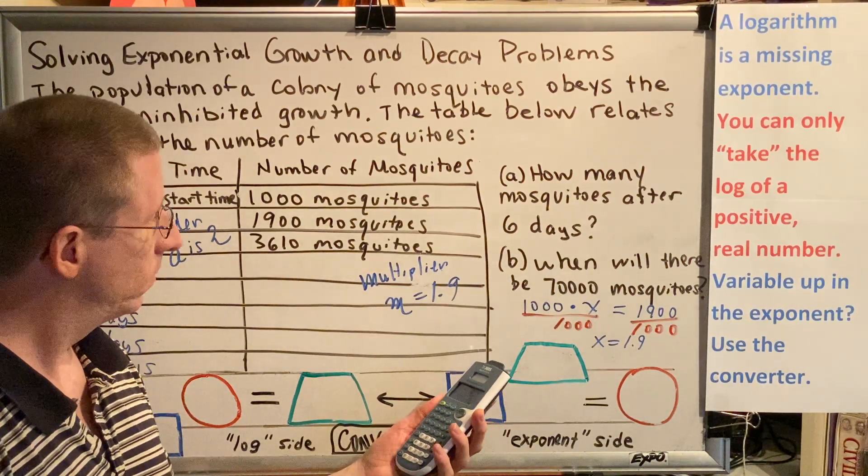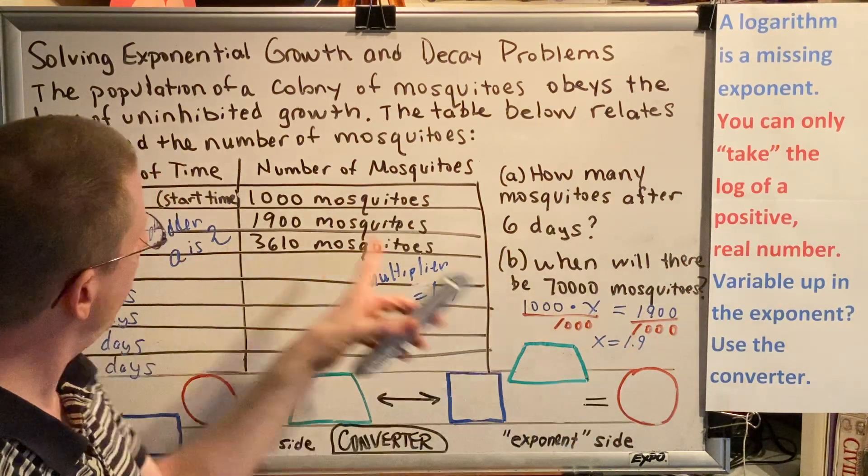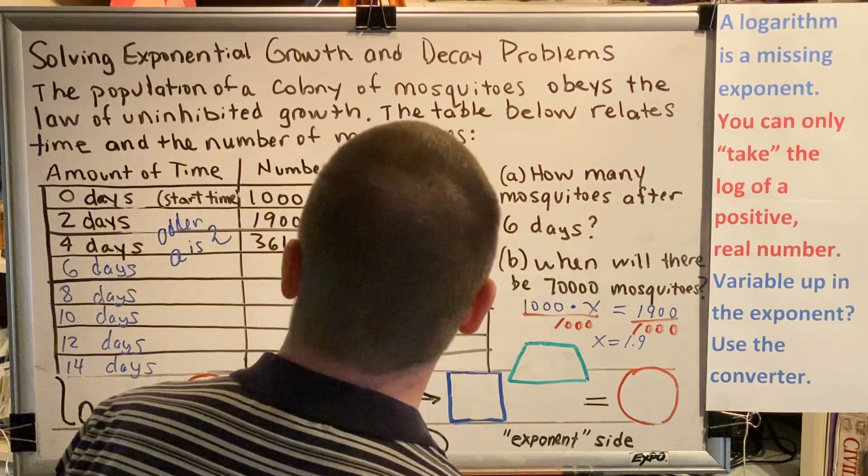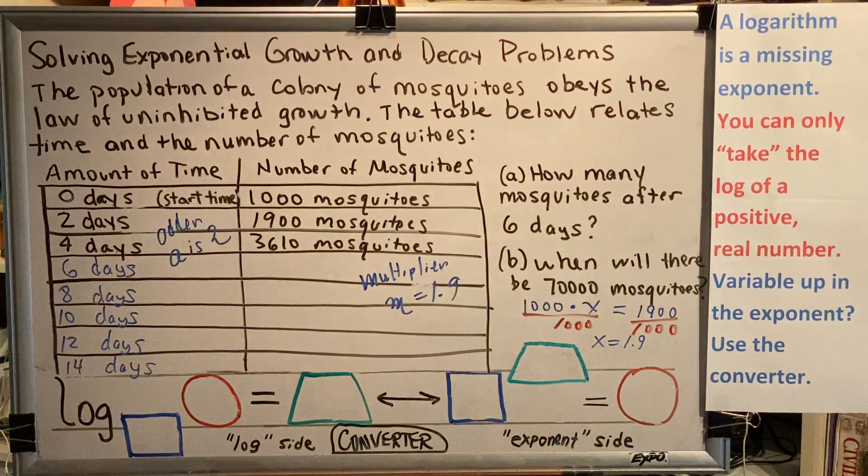So wait, what I see? 1.9. You get the same number every time you divide adjacent values. That's how you know you're dealing with growth that's truly exponential.